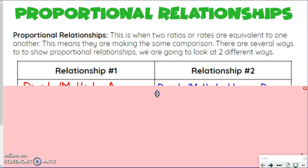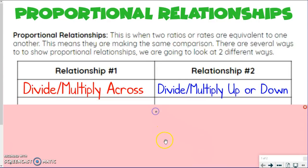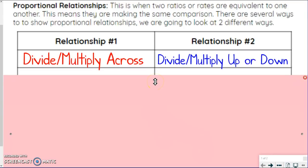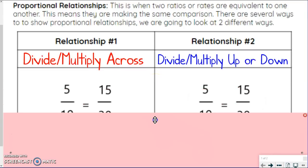So let's start filling in our table. The first relationship is to be able to divide or multiply across, noticing the relationship across, so right and left. And sometimes we multiply, sometimes we divide, depending on the way the numbers go. The second relationship is divide or multiplying up or down. So there's also connections up or down when you look at two sets of equivalent ratios or rates.